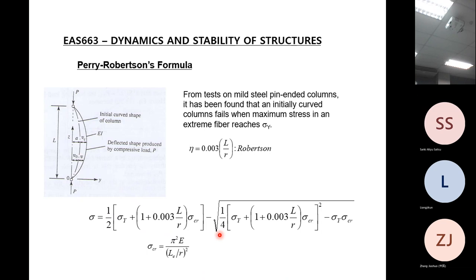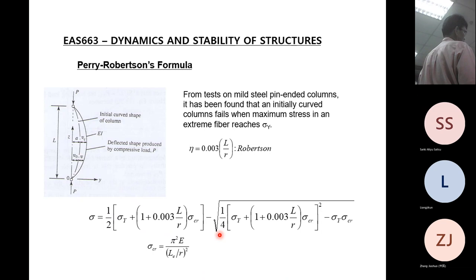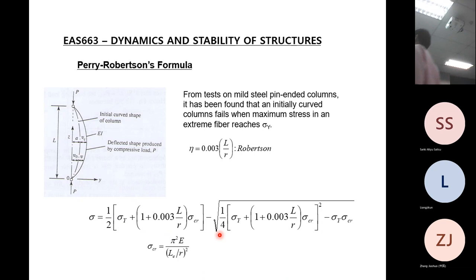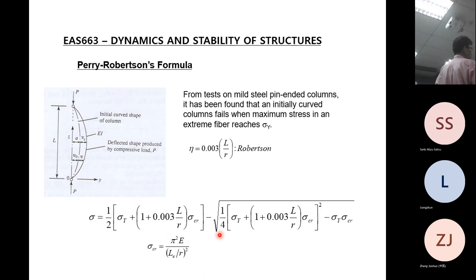Sigma_y is the yield stress of the material - if the column is steel use the yield stress of steel, if aluminium use yield stress of aluminium. This formula is for slender columns only. For short columns, if you calculate you will get sigma exceeding yield, because we assume elastic range. For short columns we would need to go to inelastic buckling - here we are still talking about elastic buckling.